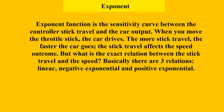The exponent function is the sensitivity curve between the control stick travel and the car output. When you move the throttle stick, the car drives. The more stick travel, the faster the car goes. The stick travel affects the speed outcome. But what is the exact relation between the stick travel and the speed? Basically, there are three relations: linear, negative exponential, and positive exponential.